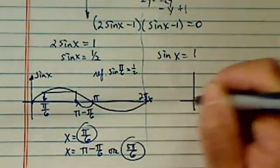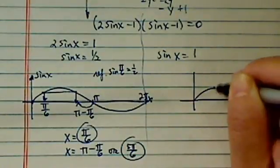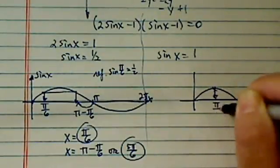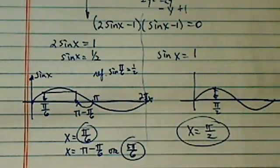Sine of x equal to 1, it's actually easy, because in 0 to 2 pi, there's only one angle. That's pi over 2. So x equal to pi over 2 is on this side.